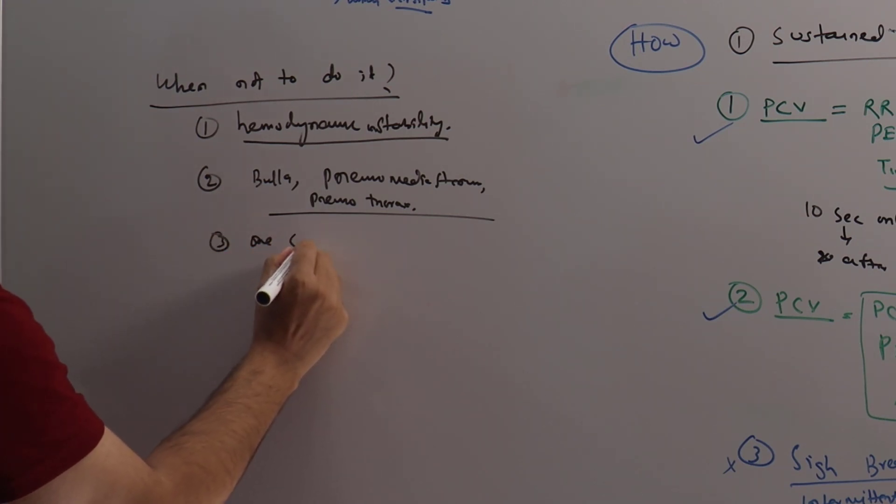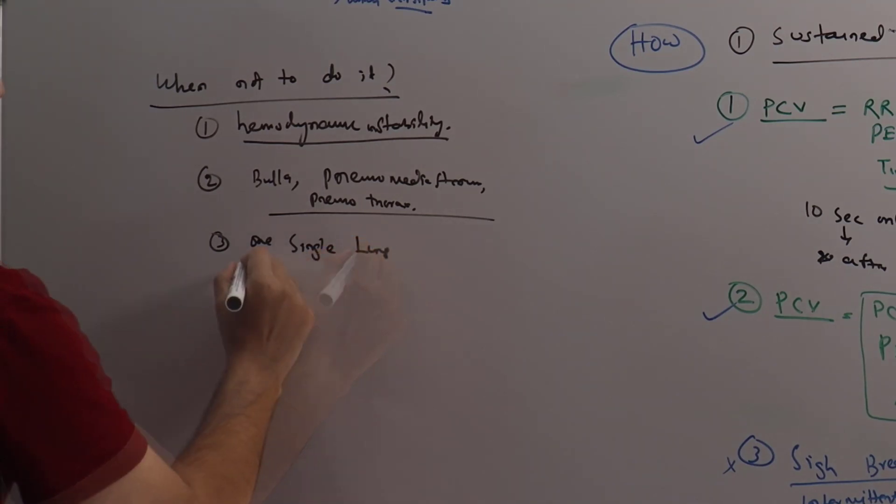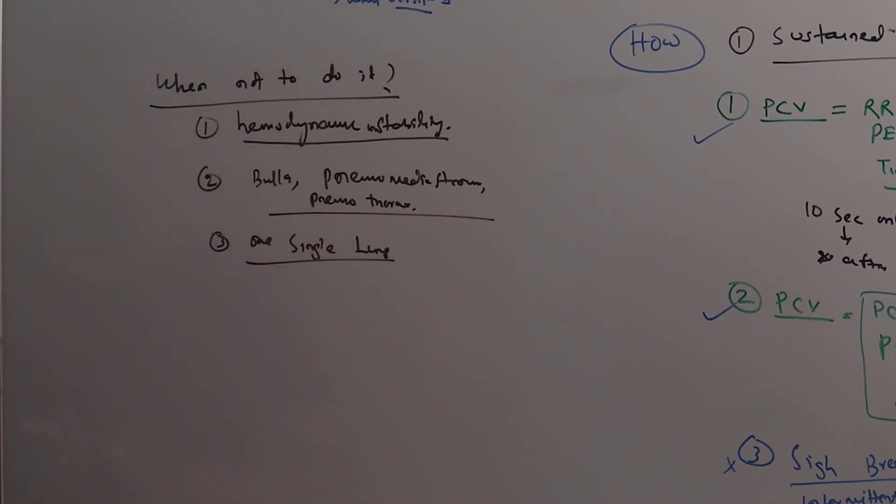Third: single lung. If a patient is having single lung, do not do it. If the disease process is homogenous, recruitment maneuver will be very helpful. However, if single lung is involved, then do not do it. It can over-distend the other lung and produce barotrauma.